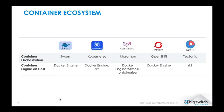From Docker, we have the Swarm orchestrator, which runs on the Docker engine. Kubernetes has an option of running on Docker or Rocket. Marathon from Mesos runs on the Mesos containerizer or the Docker engine. OpenShift, from Red Hat, also runs on the Docker engine. And finally, we have Tectonic from the CoreOS team, which runs purely on Rocket.